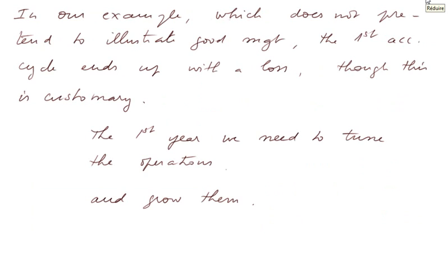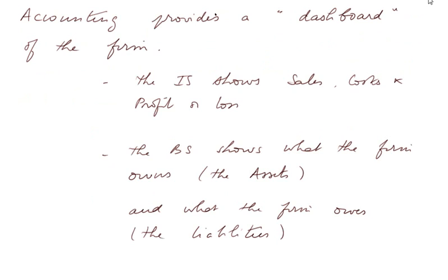In our example, which does not pretend to illustrate good management, the first accounting cycle ends up with a loss, though this is customary because the first year we need to tune the operations and then grow them. Accounting provides a dashboard of the firm — just like for a car, it provides information: the IS shows sales, cost, and profit or loss, and the balance sheet shows what the firm owns, the assets, and what the firm owes, the liabilities.